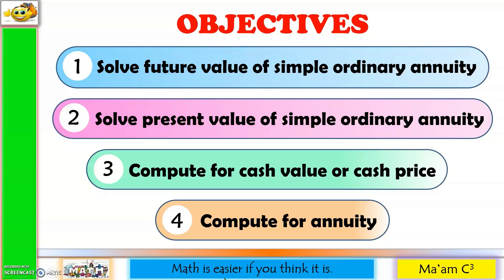Our objectives in this lesson are the following: solve future value of simple ordinary annuity, solve present value of simple ordinary annuity, compute for cash value or cash price, and compute for annuity.